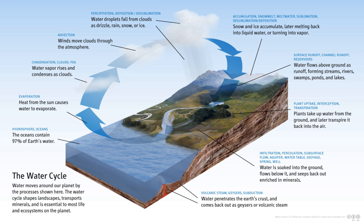Atmospheric circulation moves water vapor around the globe; cloud particles collide, grow, and fall out of the upper atmospheric layers as precipitation. Some precipitation falls as snow or hail, sleet, and can accumulate as ice caps and glaciers, which can store frozen water for thousands of years.